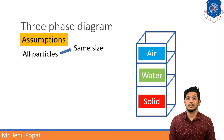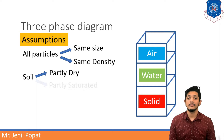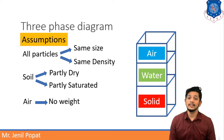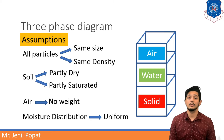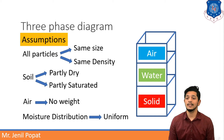Now let us go through the assumptions needed to understand the three-phase diagram. First, all the particles are assumed to be of the same size and the same density. The soil will be partly dry as well as partly saturated. Air is assumed to have zero weight — weight of air is neglected. And moisture distribution should be uniform throughout the soil mass.